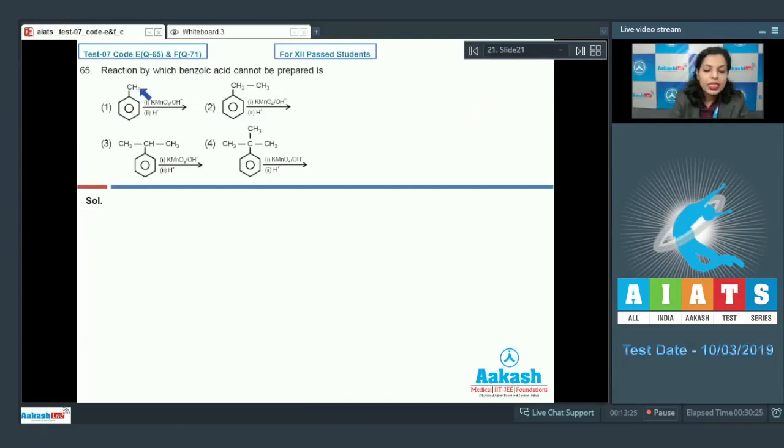Let's take question number 65. Reaction by which benzoic acid cannot be prepared is? Let's check the reaction given here. In the first option, we have the reaction in which toluene we have and it is oxidized with the help of alkaline KMnO4 followed by acidification and it will result in the formation of benzoic acid. This is giving you benzoic acid. I'll just mark a tick here.